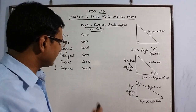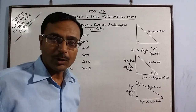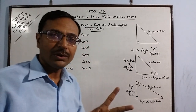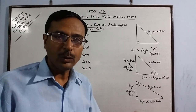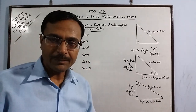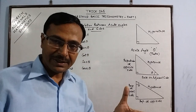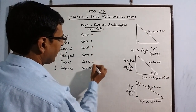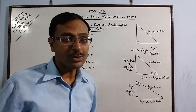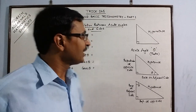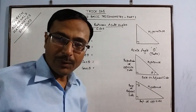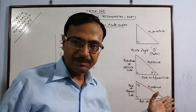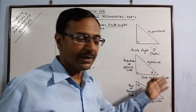Sin theta, cos theta, tan theta, cot theta, sec theta, and cosec theta — all six trigonometric functions are actually ratios, so we also call them trigonometric ratios. They are ratios of the three sides of a right angle triangle: the hypotenuse, perpendicular, and base — or equivalently, the hypotenuse, opposite side, and adjacent side.